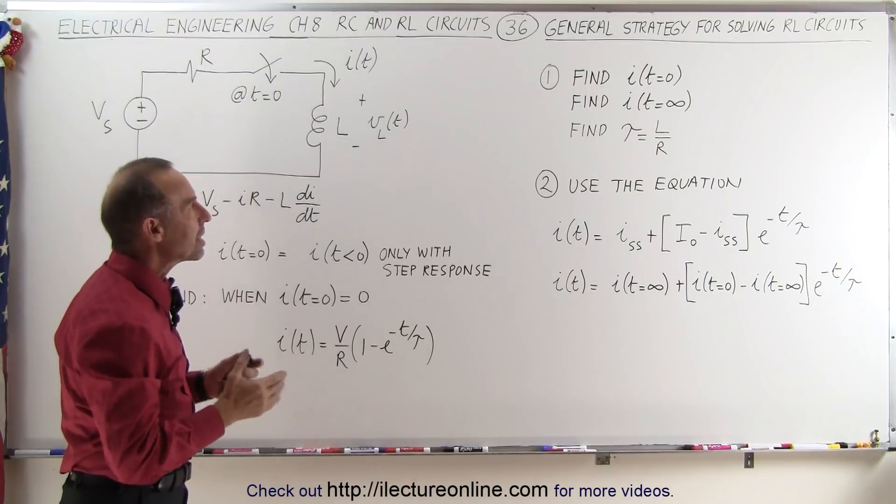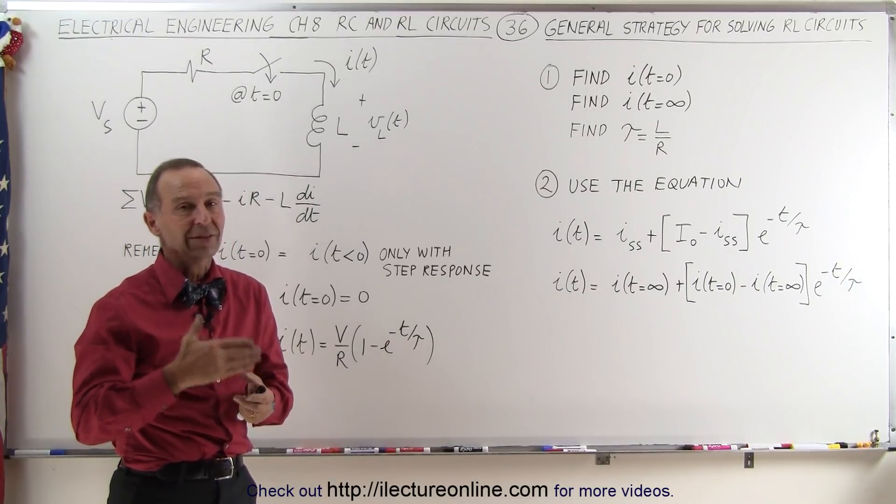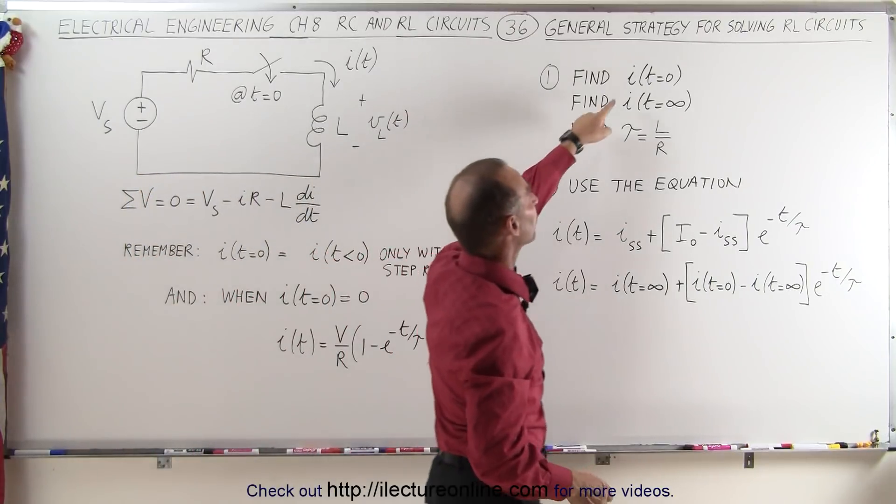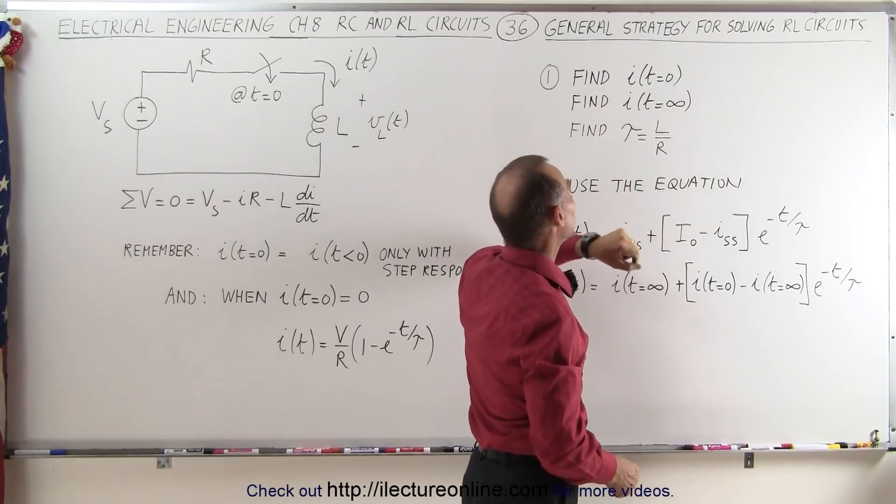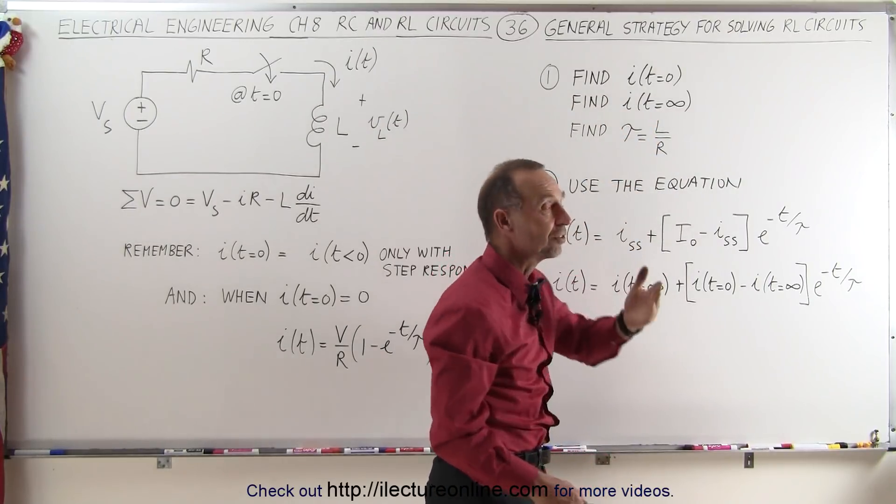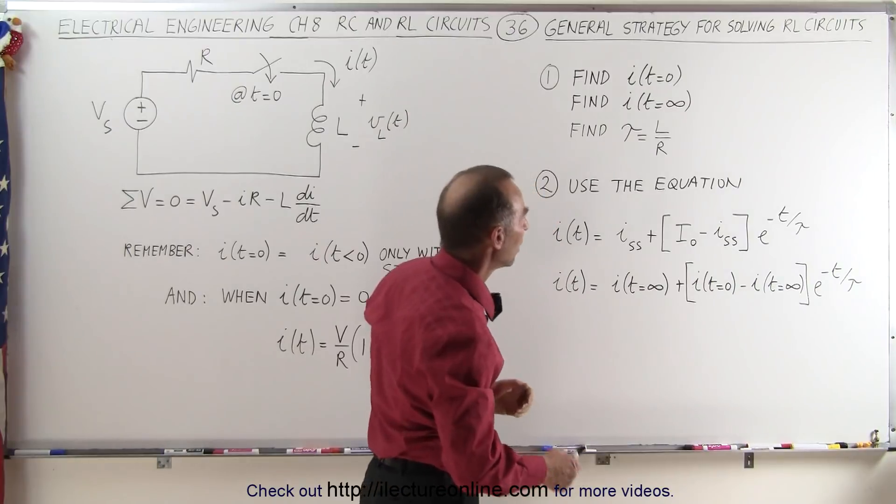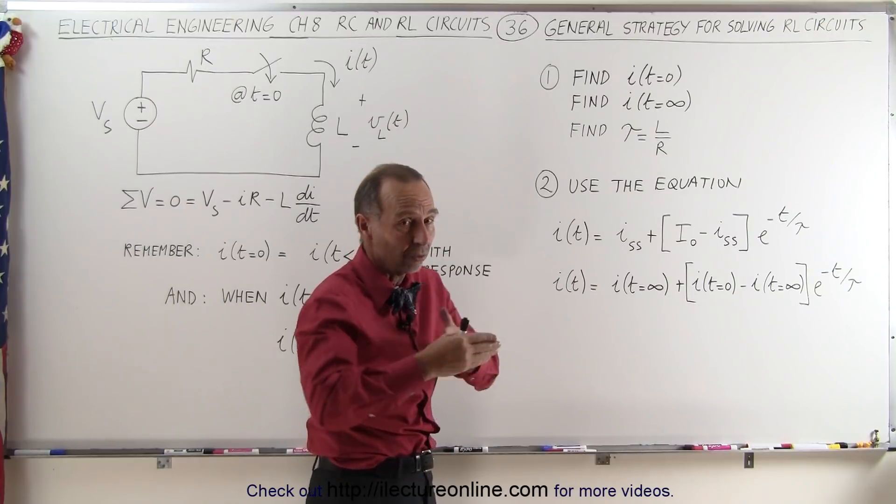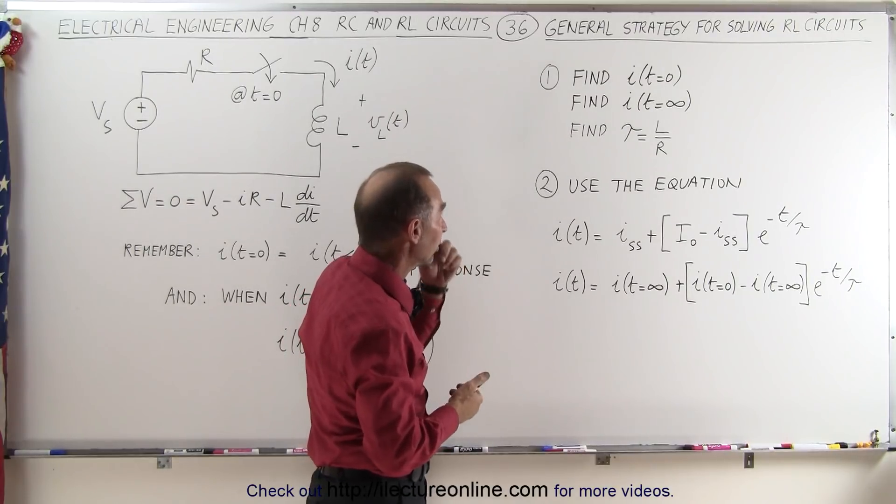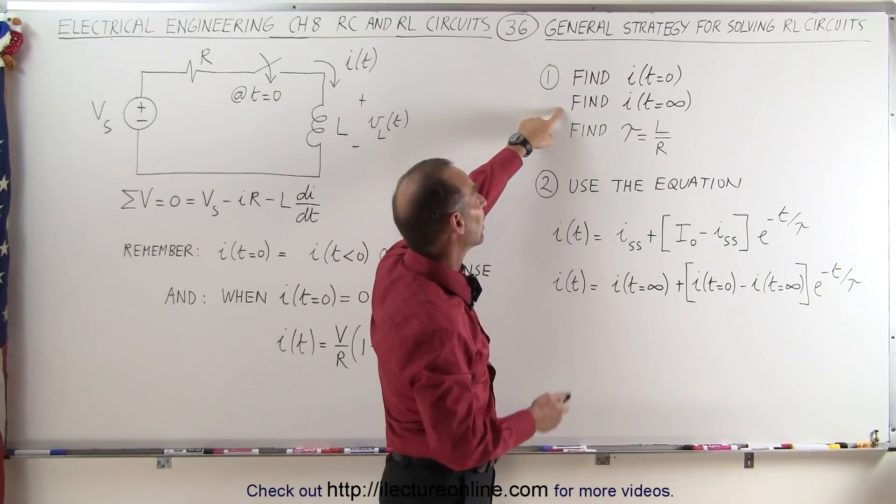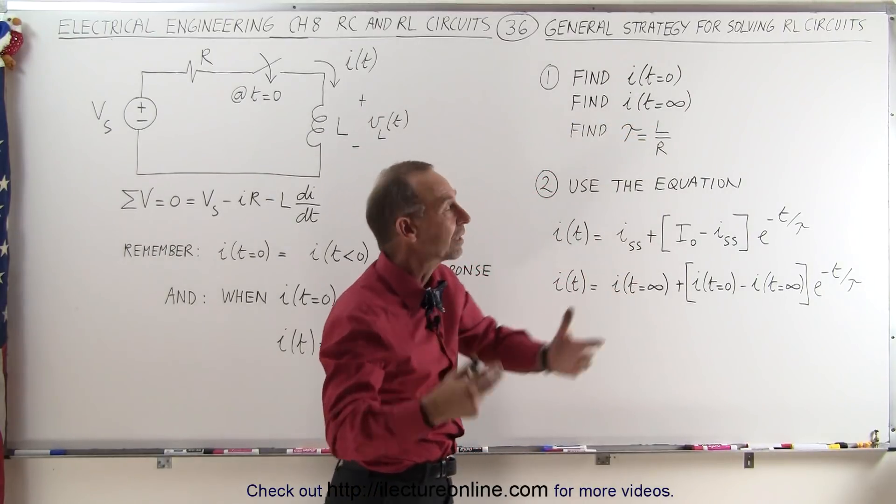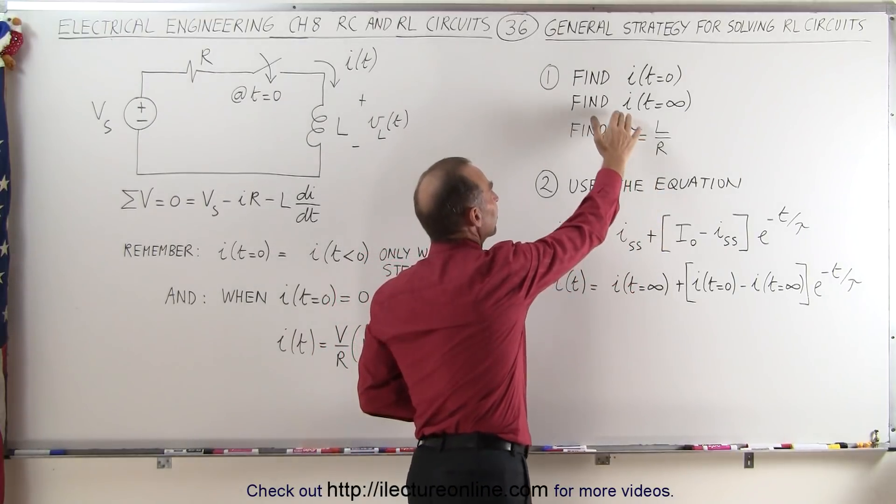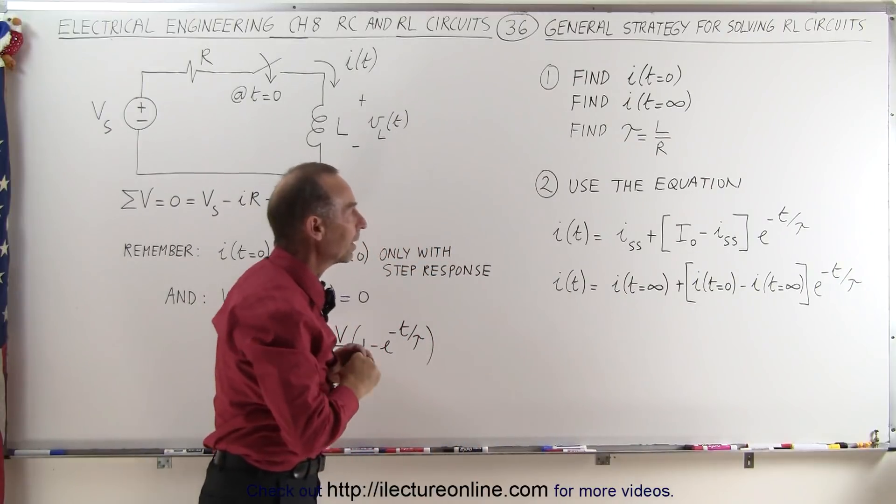So what we need to do here is instead of finding the voltages at time equals zero and time equals infinity, with RL circuits we're going to find currents at time equals zero and at time equals infinity. And we're going to find the time constant, which in this case is L over R. Once you determine those values, the current when time equals zero, that's when the switch closes or the switch opens or the current goes to a different direction, and then when we reach steady state, when the time goes to infinity or a very long time has elapsed, typically more than five time constants, then we find our steady state current and then we find our time constant.